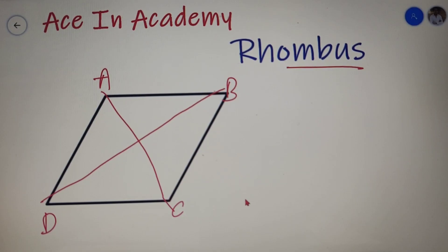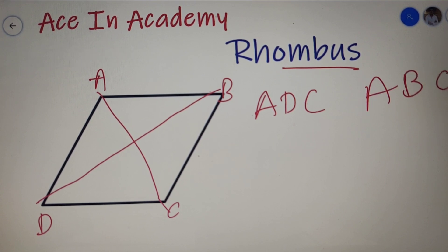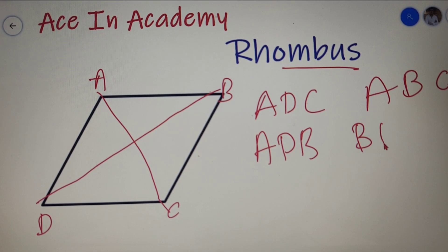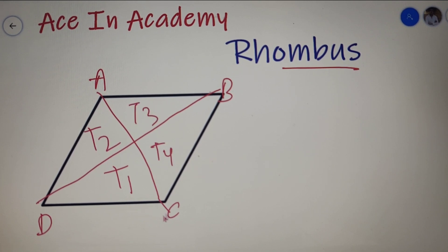The sixth property of a rhombus is that the larger triangles formed by the diagonals are congruent to each other. So triangle ADC and triangle ABC are congruent, and triangle ADB and triangle BDC are also congruent. Additionally, the four small triangles formed by both diagonals are also congruent to each other — T1, T2, T3 and T4 are all congruent to each other.